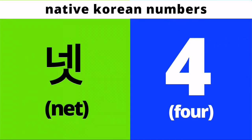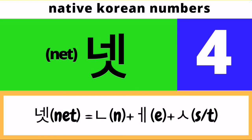Next, the native Korean version of number four is Net. This is just composed of one syllable. Pronounce it with me: Net. Just like in the case of Set, the last Siot character will have the T sound. To spell Net in Hangul, we need to draw a Nieun character followed by an E character followed by a Siot character. Since Siot is on the third position, it will have the T sound, so this will be pronounced as Net instead of Nes.